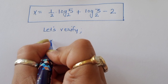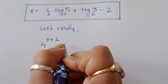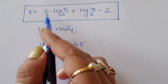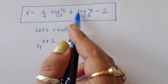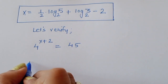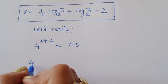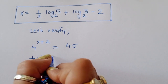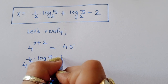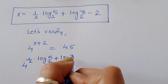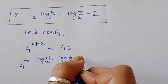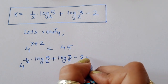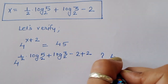Let's verify this value. The question is 4 power x plus 2 equals 45, and we substitute x equals 1 upon 2 times log of 5 to the base 2 plus log of 3 to the base 2 minus 2. So we check: 4 power of that x-value plus 2, question mark 45.